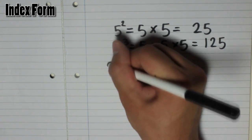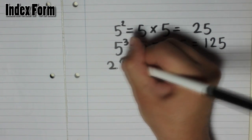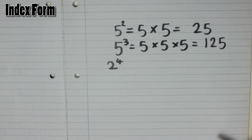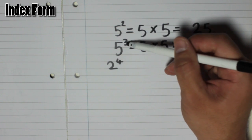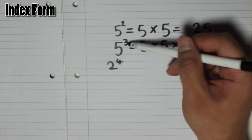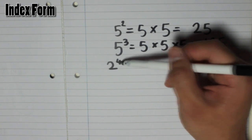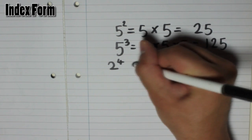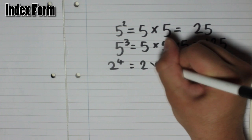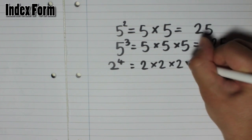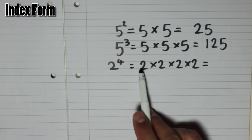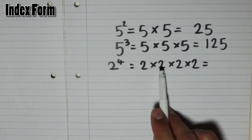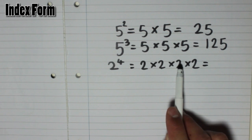Now let's have a look at another example. If we had 2 to the power of 4 — unlike to the power of 2, where we call it squared, and to the power of 3, where we call it cubed — to the power of 4 doesn't have a special name. You just say 2 to the power of 4, and it means 2 times 2 times 2 times 2.